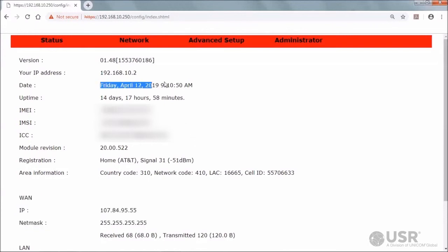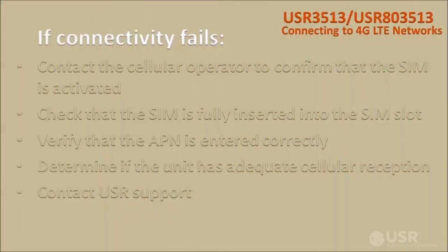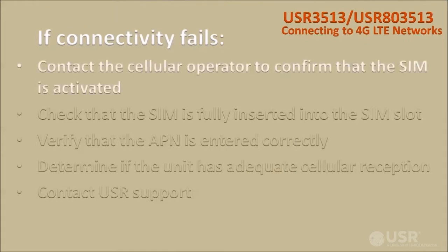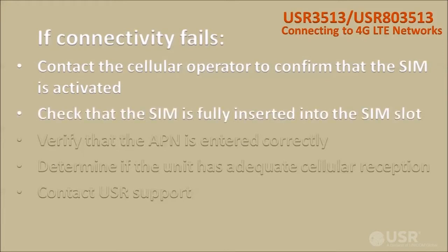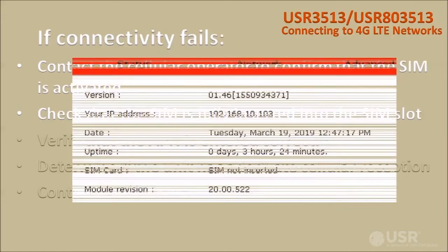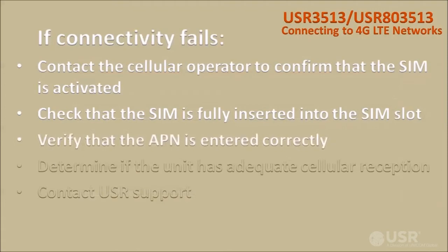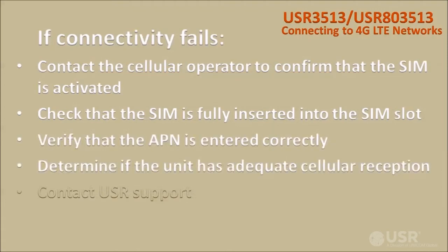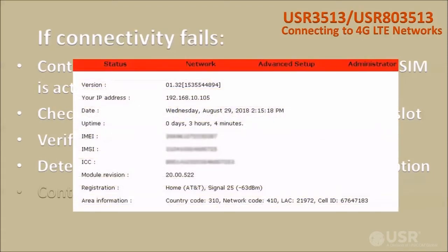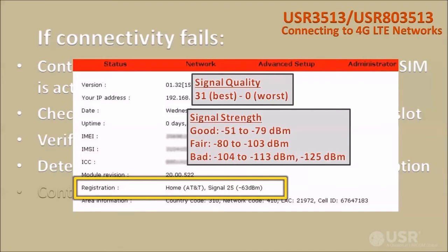The cellular gateway's date and time will automatically synchronize to the network clock. There are several things to try if the gateway fails to connect: contact the cellular operator to confirm that the SIM is activated; check that the SIM is fully inserted into the SIM slot — an entry in the status page will report SIM not inserted if it is not fully inserted; verify that the APN is entered correctly; and determine if the unit has adequate cellular reception, as the status page displays signal quality and signal strength measurements.